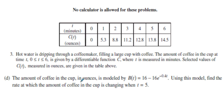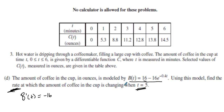Part D says the amount of coffee in the cup in ounces is modeled by a given function B(t). We're asked to find the rate at which the coffee in the cup is changing at t = 5. Since we want a rate, we take the derivative B'(t). Taking the derivative, the constant term drops out and we get negative 0.4 times 16 times e to the negative 0.4t, which simplifies to 6.4 times e to the negative 0.4t.